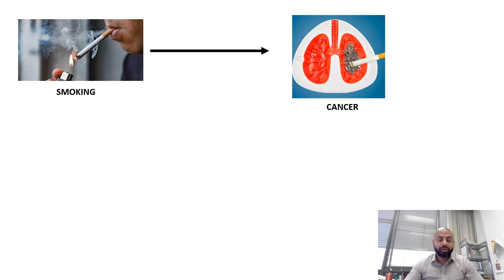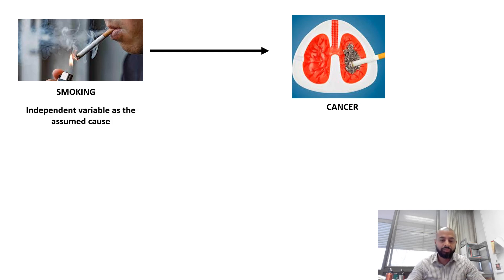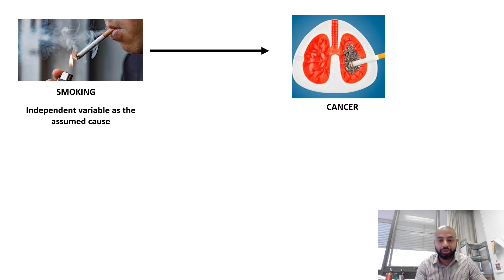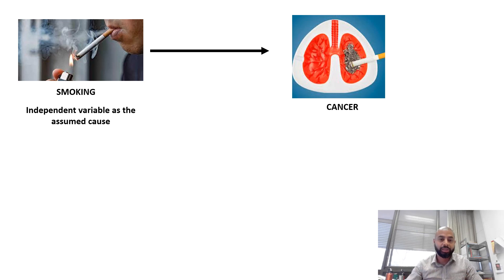In today's example we have the causal relationship between smoking and cancer. What we are trying to show is that smoking can cause cancer. In this example, smoking is the independent variable — we assume it to be the cause of cancer. I use the word 'assumed' because we have not yet proved the relationship. The definition of independent variable is that any variation in it is not caused by other variables.